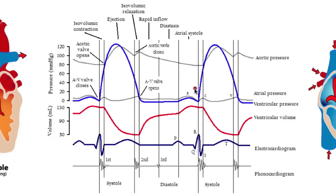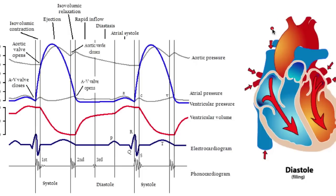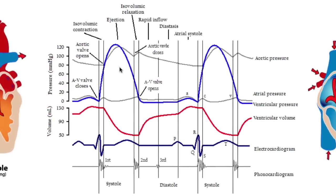Here in blue, we are looking at ventricular pressure — that's the pressure in the left ventricle. Here in gray, we're looking at the atrial pressure, so the pressure in the atria. And then last but not least, we're looking at the aortic pressure — the pressure in the aorta, which sends the blood from the heart to the rest of the body. So that's an overview of what we're going to be looking at. This summarizes the entire cardiac cycle, and we're going to get a good understanding of what is going on.